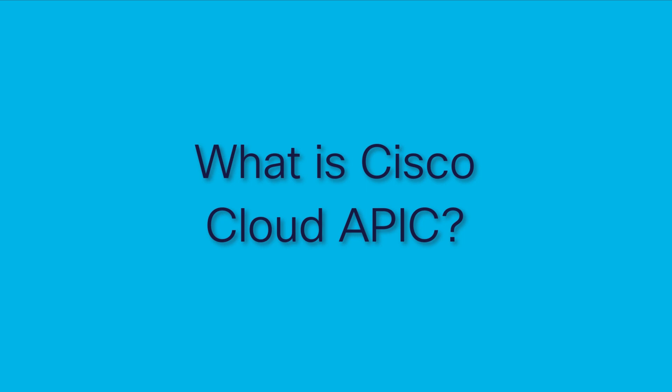Cisco Cloud APIC is a software component of Cisco ACI that can be deployed on a cloud-based virtual machine. Cisco Cloud APIC is a key part of Cisco ACI extension to the public cloud and provides consistent policy, security, and analytics.